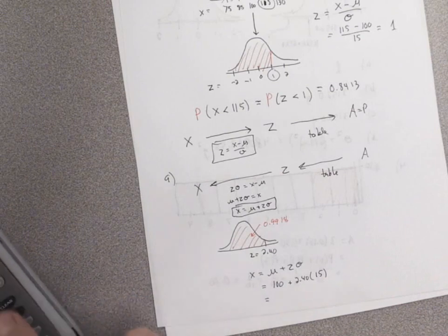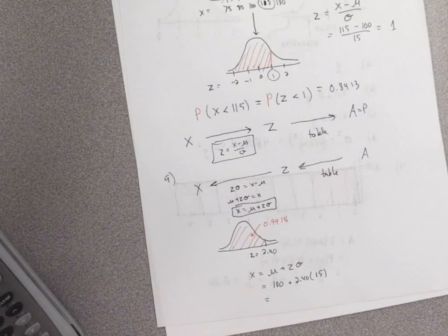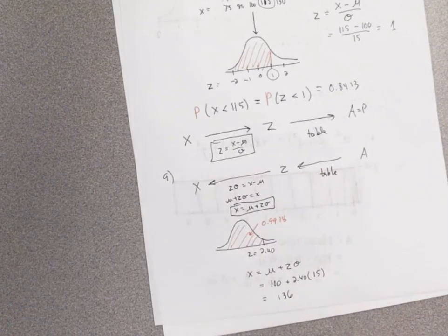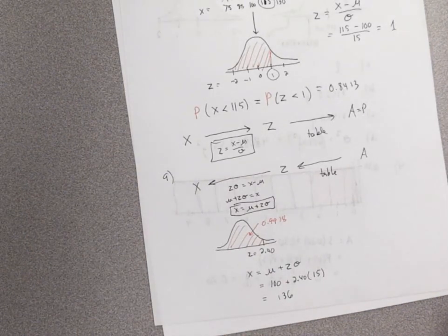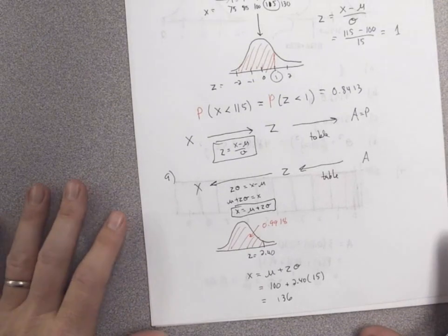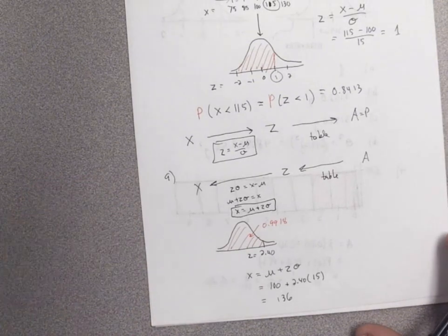Calculating that gives x = 100 + 36 = 136 — that came out nicely. There are no decimal IQ scores, so the closest whole number is fine. Unless the problem gives specific rounding instructions, just round to the nearest whole number.